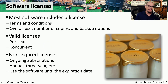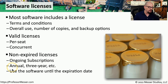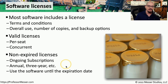Some licenses are perpetual, meaning you purchase the license one time and it can be used forever without any additional purchases. Other types of licenses might be subscription licenses, where you have an annual or three-year subscription and can use the software until that expiration date. Once the expiration date arrives, you either have to purchase new licenses or stop using the software.